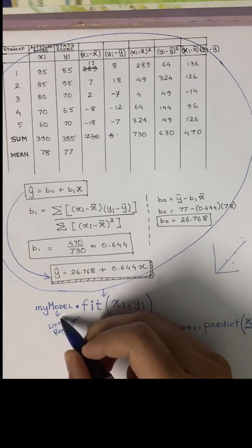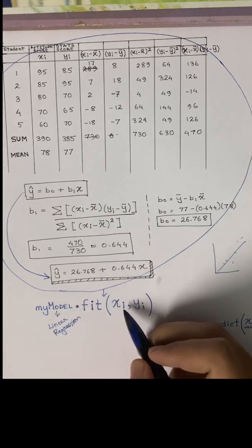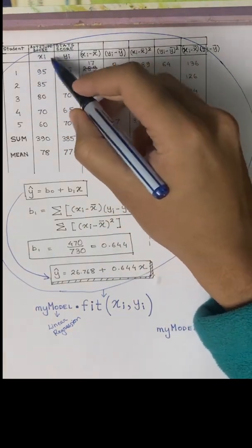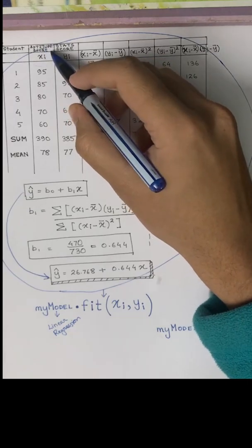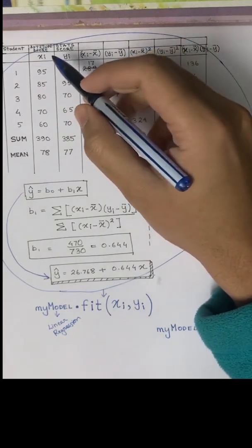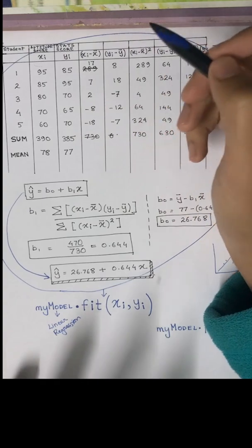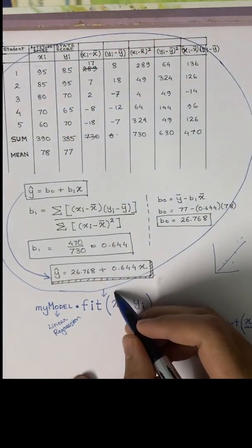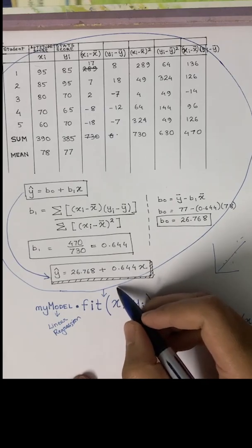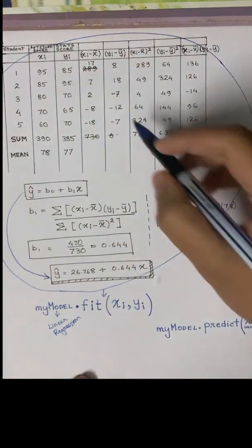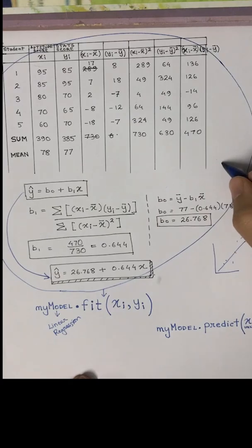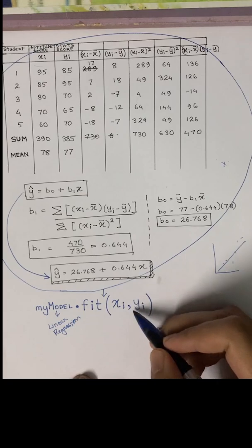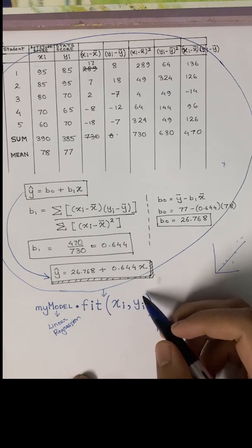My model dot fit does x, y. What is xi? Xi here is this one. Suppose there were more variables, not just aptitude score, but many other variables like scores for science, math and all. Then xi would be an array. We would store all the independent variables in an array called x and pass that. This one is the outcome variable that we are trying to predict.